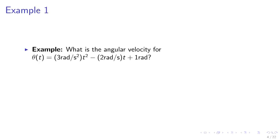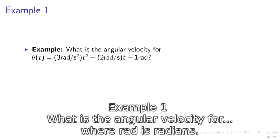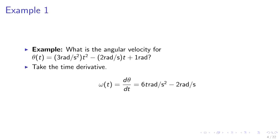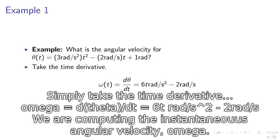Example. What is the angular velocity for theta of t equals 3 rad per second squared times t squared, minus 2 rad per second times t, plus 1 rad, where rad is radian? I simply take the time derivative. Omega of t equals d theta over dt equals 6t rad per second squared minus 2 rad per second.